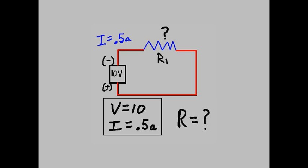New problem. Voltage equals 10. I equals 0.5 Amps. That's a half of an amp, 0.5 Amps. R equals what?